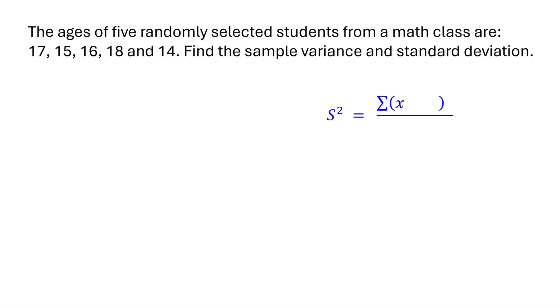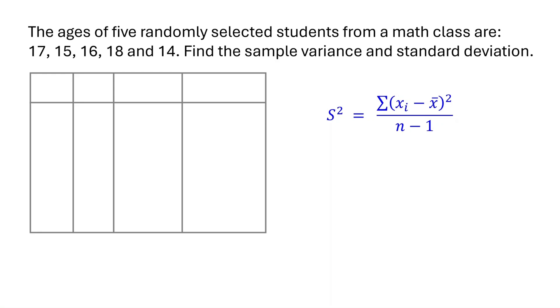Let's start with the variance. To keep things clear, we will organize our work in a table. In the first column, list all the data points in the sample: 17, 15, 16, 18, and 14. In the second column, find the sample mean and write it down. In the third column, calculate the difference between each data point and the mean. In the last column, square each difference.